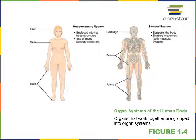Now we'll go through each of the 11 organ systems. Starting with the integumentary system, which consists of the skin, hair, nails, sensory receptors for touch, sweat glands, and other exocrine glands like sebaceous glands found in the skin. The functions of the integumentary system are to enclose and protect the body and to detect sensory information for touch.